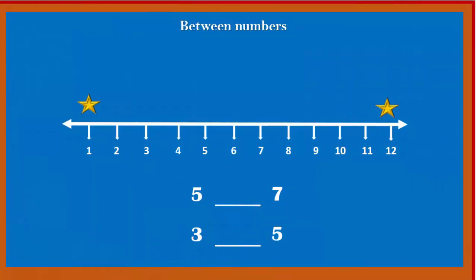Let's see it on a number line. The first example is 5 and 7. Let's see with the help of the stars which number comes between them. Which number is there between 5 and 7? That's right — it's number 6.